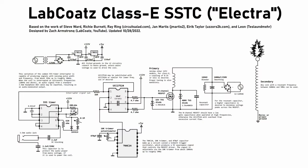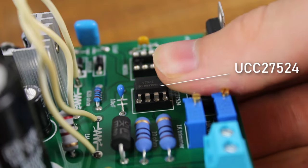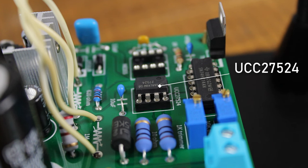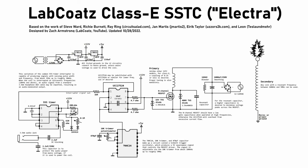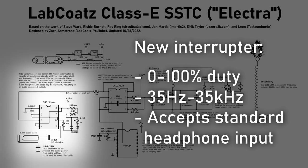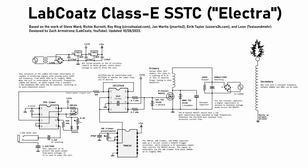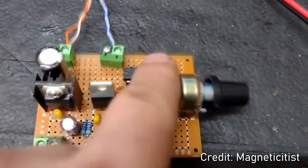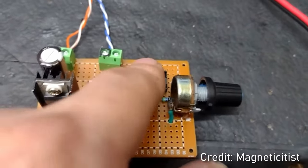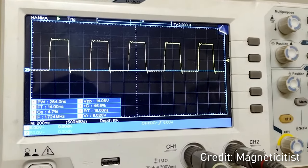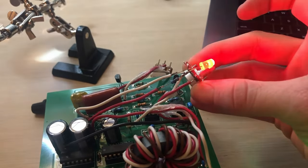My latest circuit is quite similar to Steve Ward's Class E, but uses the faster UCC27524 in place of the UCC37322, and the original interrupter circuit has been swapped out for my own custom interrupter circuit, which can produce almost any pulse width or frequency desired and play music when cranked up into the ultrasonic range. Additionally, this driver operates using an adjustable Schmitt trigger oscillator, rather than antenna feedback or a fixed frequency crystal oscillator. To explain how it works, here's my good friend and fellow science YouTuber, Tate from BackMaxSci.